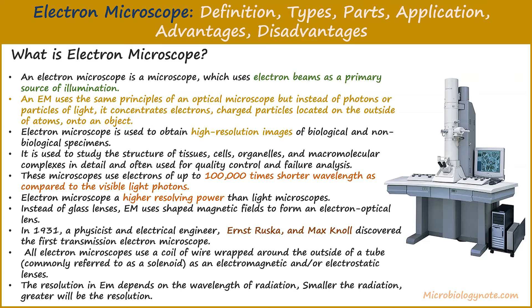All electron microscopes use a coil of wire wrapped around the outside of a tube, commonly referred to as a solenoid, as electromagnetic and/or electrostatic lenses. The resolution in an electron microscope depends on the wavelength of radiation — the smaller the radiation, the greater will be the resolution.